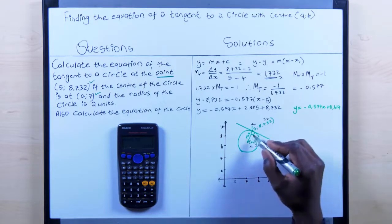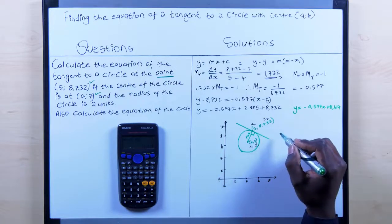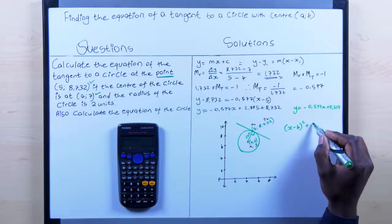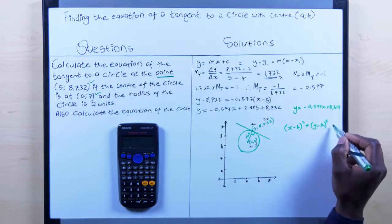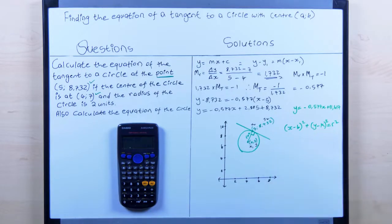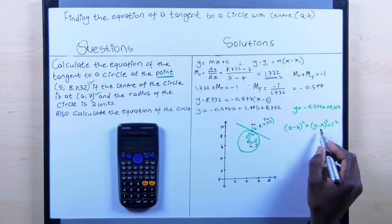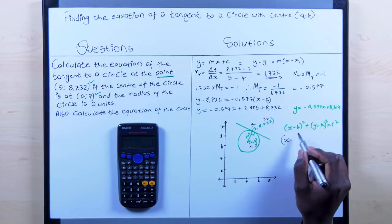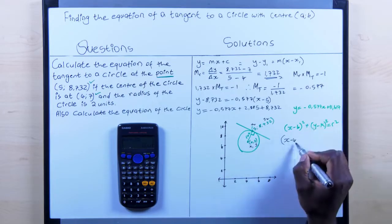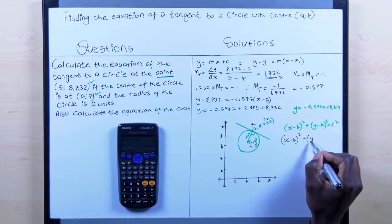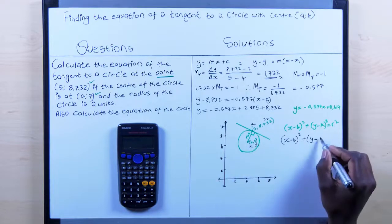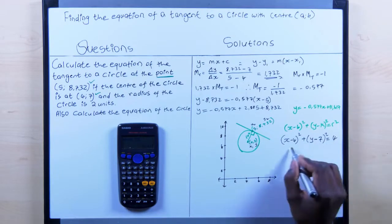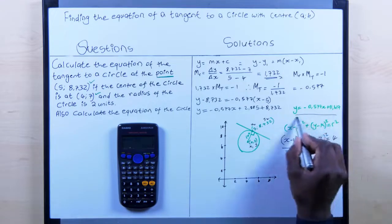This is a circle with a center not at the origin, so the equation takes the form (x − h)² + (y − k)² = r², where h and k are the coordinates of the center. With center (4, 7) and radius 2: the equation of the circle is (x − 4)² + (y − 7)² = 4. That is the equation of the circle, and y = −0.577x + 11.617 is the equation of the tangent.